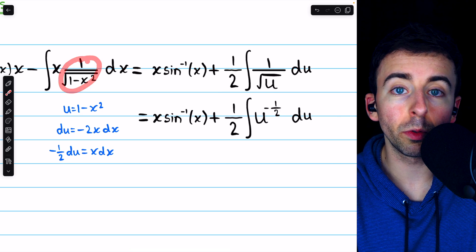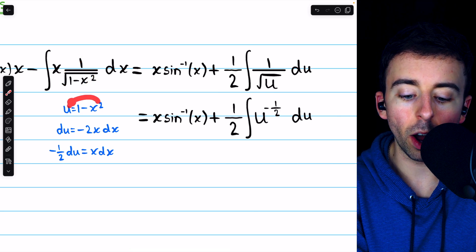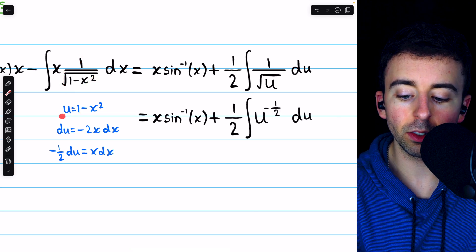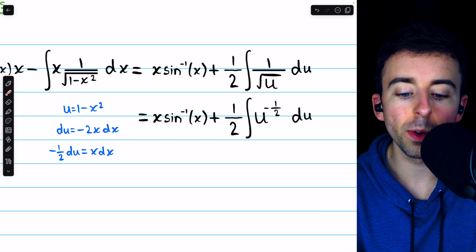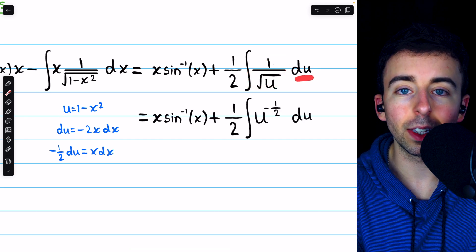We have 1 over the square root of 1 minus x squared, but 1 minus x squared is u, so it's 1 over the square root of u, and then of course we also have du.